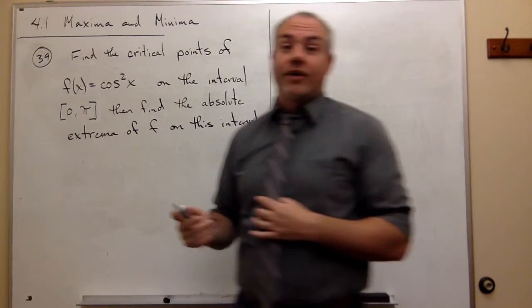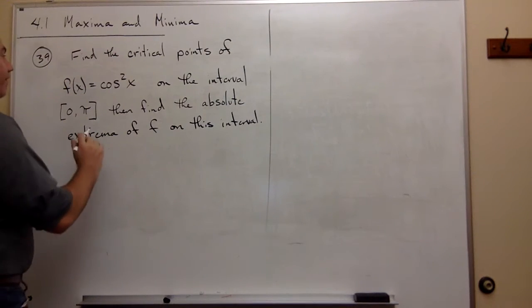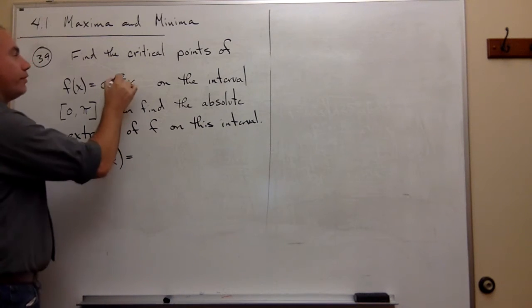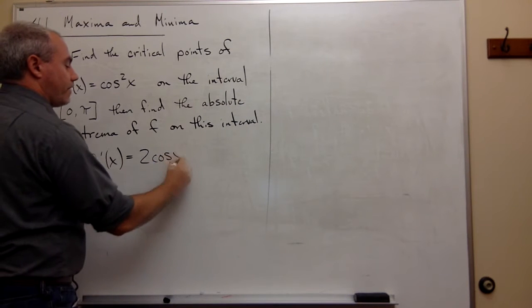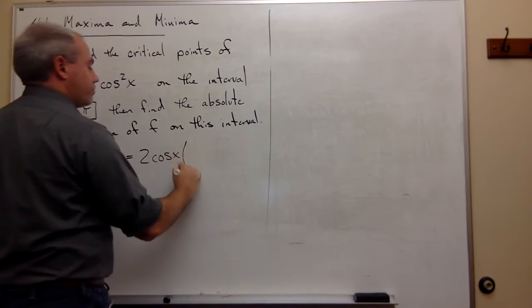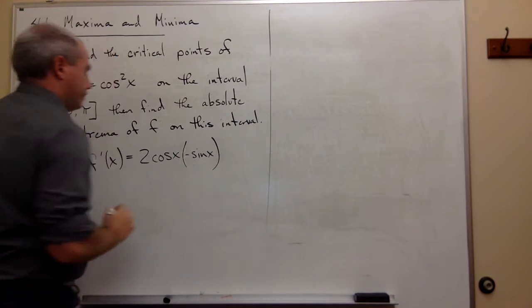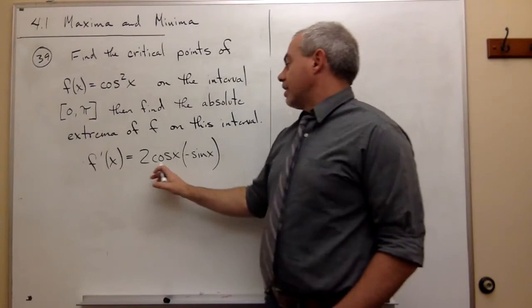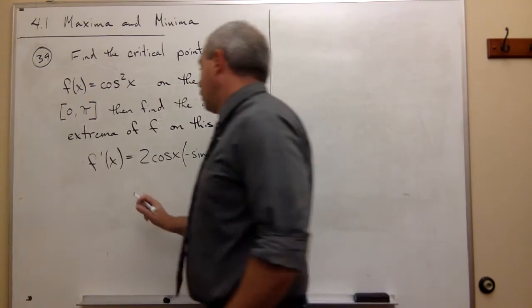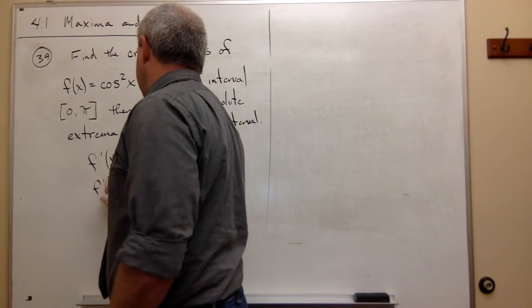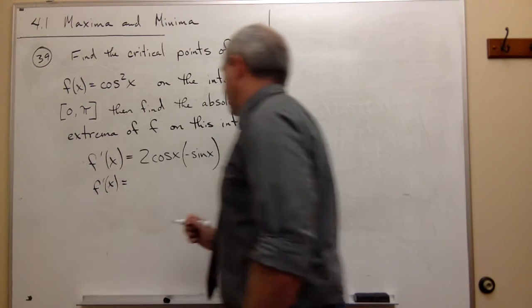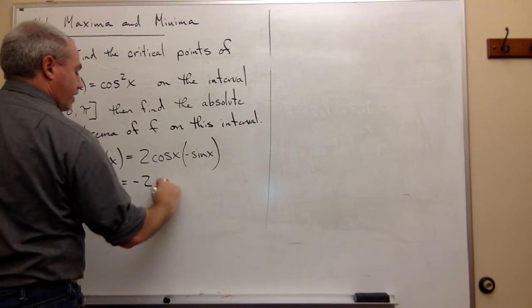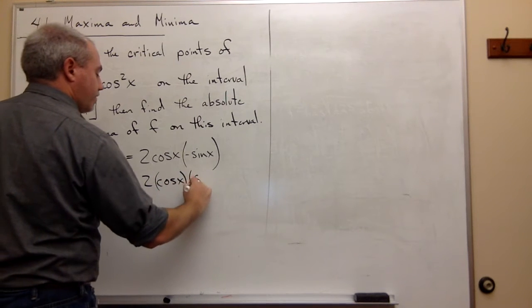So let's start by finding all the critical points — first we need to take a derivative of the function. The derivative of f(x) = cos²(x) is, by the chain rule, f'(x) = 2·cos(x) times the derivative of cos(x), which is negative sin(x). So my derivative is 2·cos(x)·(−sin(x)), or equivalently f'(x) = −2·cos(x)·sin(x).